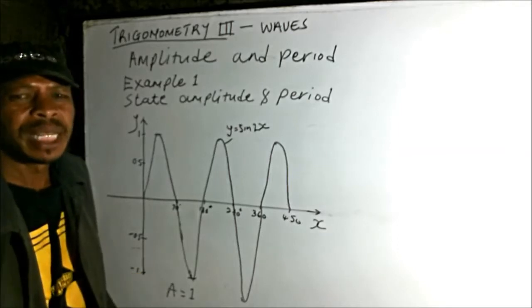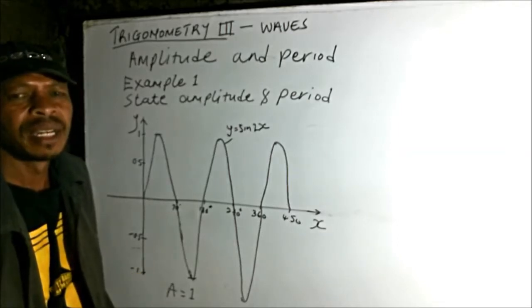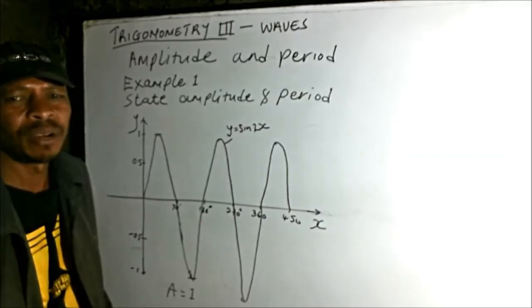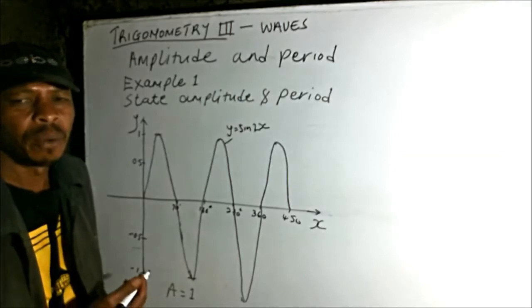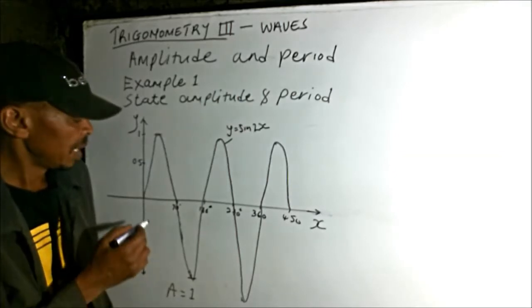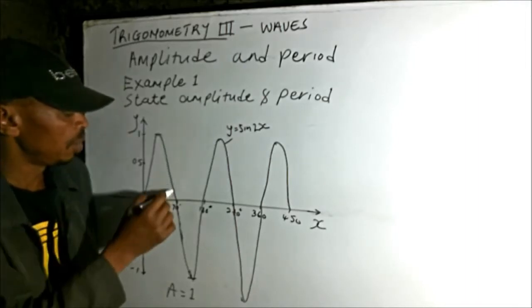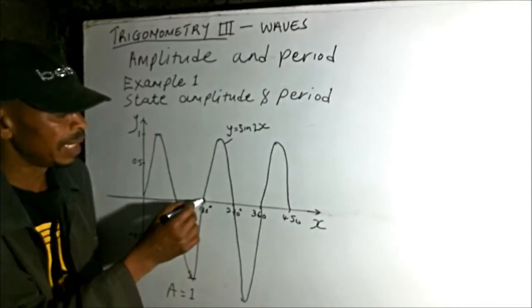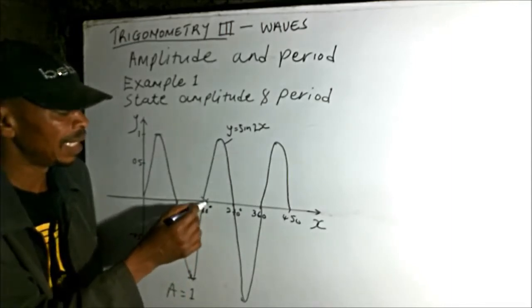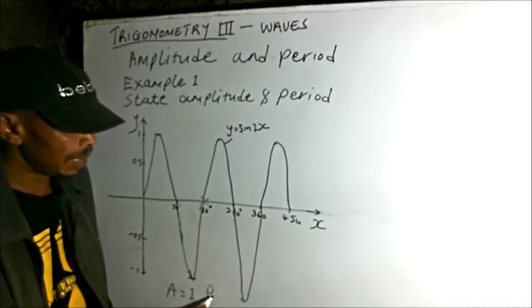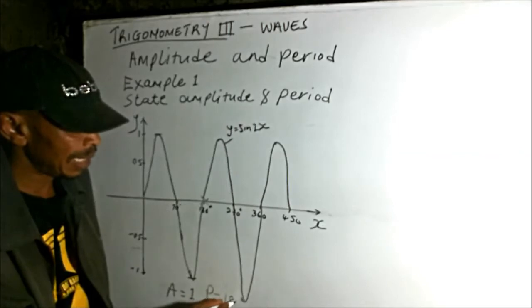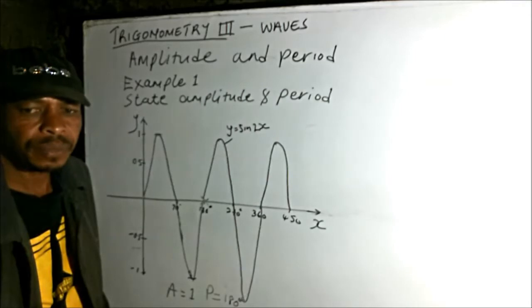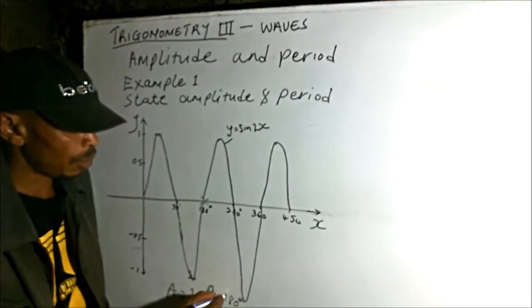Then we go to period. We have said period is the duration you take to make a complete cycle in terms of the angles, since our wave is representing angles. This is the period from 0 to 90 - that's a half cycle. Then again we complete the full cycle at 180. That means period equals 180 degrees.